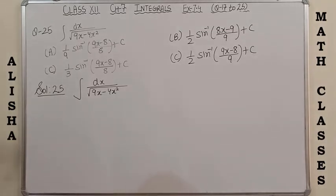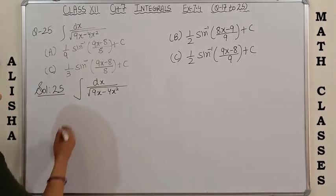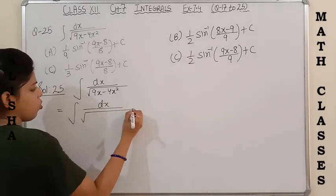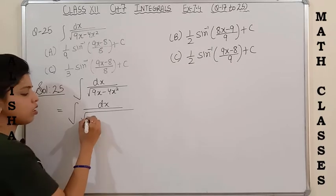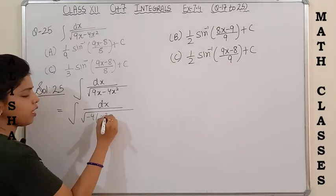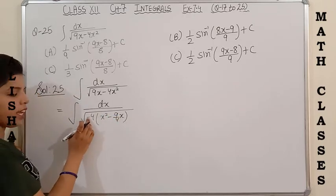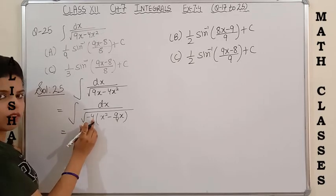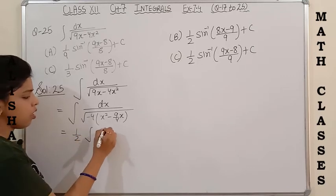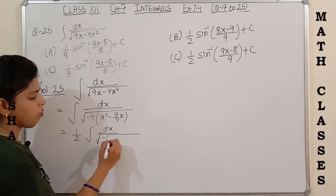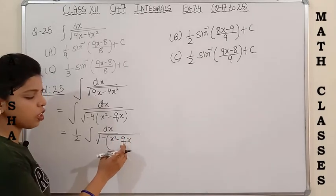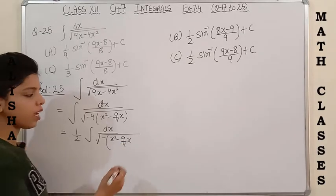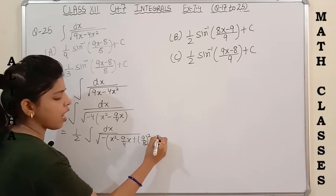The last question of Exercise 7.4 is question 25: integration of dx upon √(9x-4x²). This is a quadratic under a square root, so we apply the complete square method. First make the coefficient of x² equal to 1 by taking -4 common: -4(x²-9/4 x). Since we can't take a negative sign outside the square root, we take only √4 = 2 outside, giving (1/2) times integral of dx upon √[-(x²-9/4 x)].